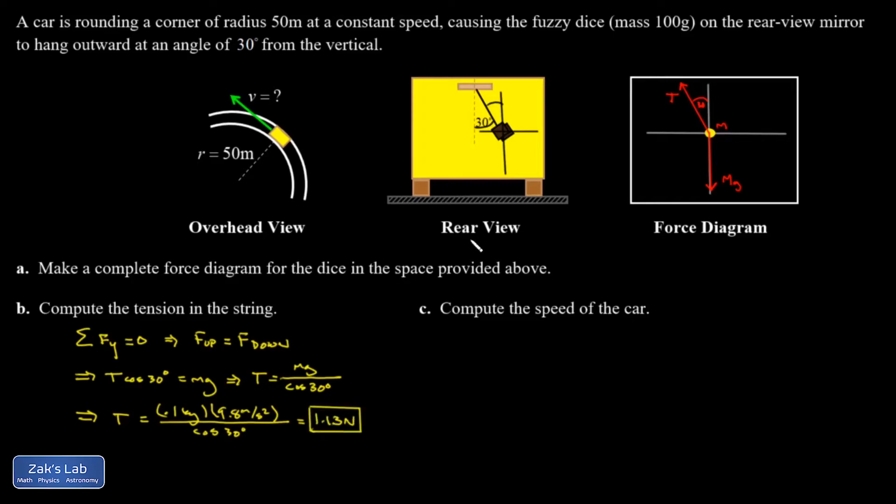Next, I want to get the speed of the car. And it should come as no surprise that that has something to do with the horizontal analysis here. So what's going on in the x direction? There actually is an acceleration. So if I go back to my original diagram, the acceleration points to the center of curvature.